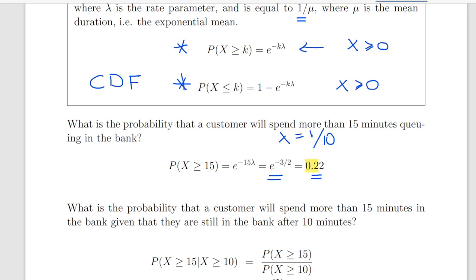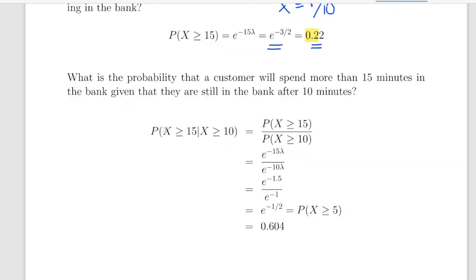The second part is, what is the probability that a customer will spend more than 15 minutes in the bank, given that they are still in the bank after 10 minutes? So this is an interesting one, and it relates to the memoryless property of the exponential distribution. Now it actually should work out that it is probability of x greater than or equal to 5. It's the difference beyond 10 minutes.